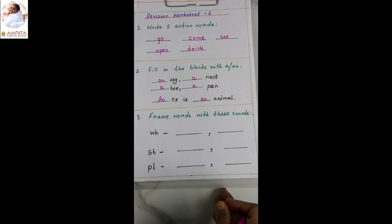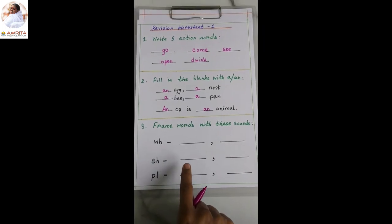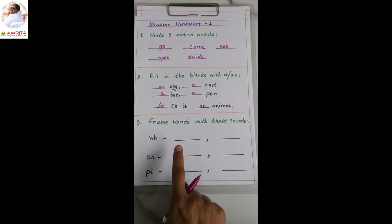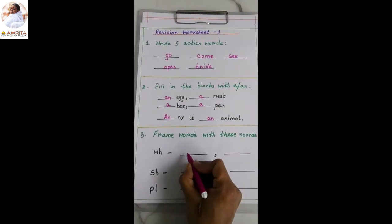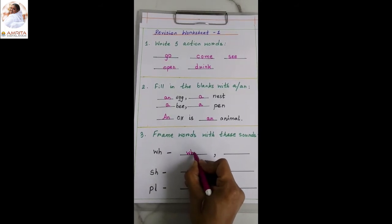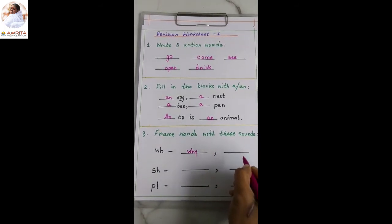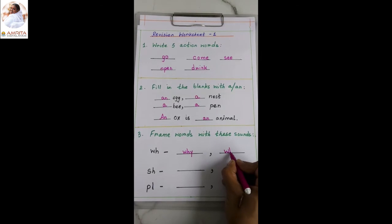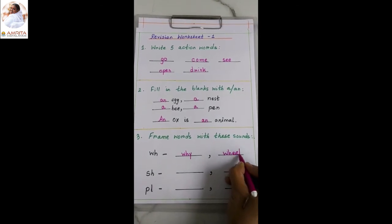Next is frame words with these sounds. W-H, different sound words. W-H what, W-H-Y why. Then next, W-H-E-E-L wheel.